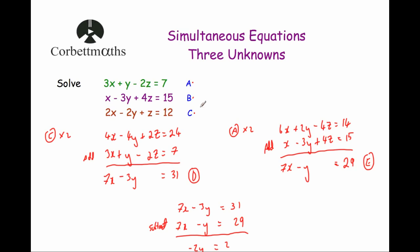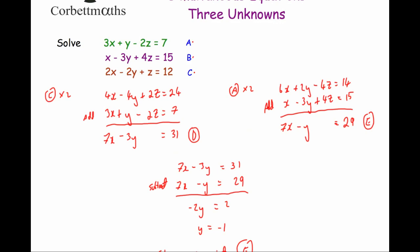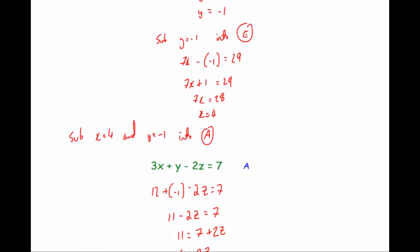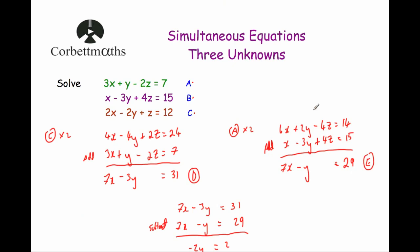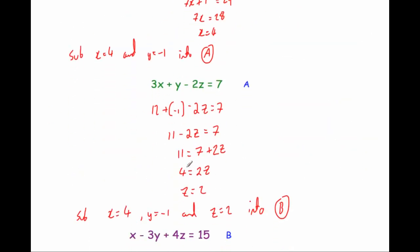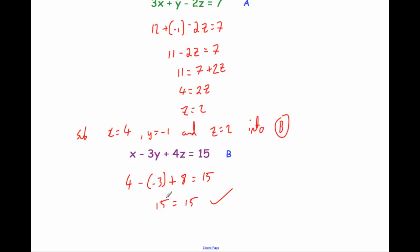To solve simultaneous equations with three unknowns: first, identify a variable to cancel out — I chose z. Cancel that variable using two pairs of equations to produce two new equations with two variables. Solve those using normal simultaneous equations to get two values. Then substitute those back into one of the original equations to find the third variable. Finally, if you have time, verify by substituting all three values into another original equation.